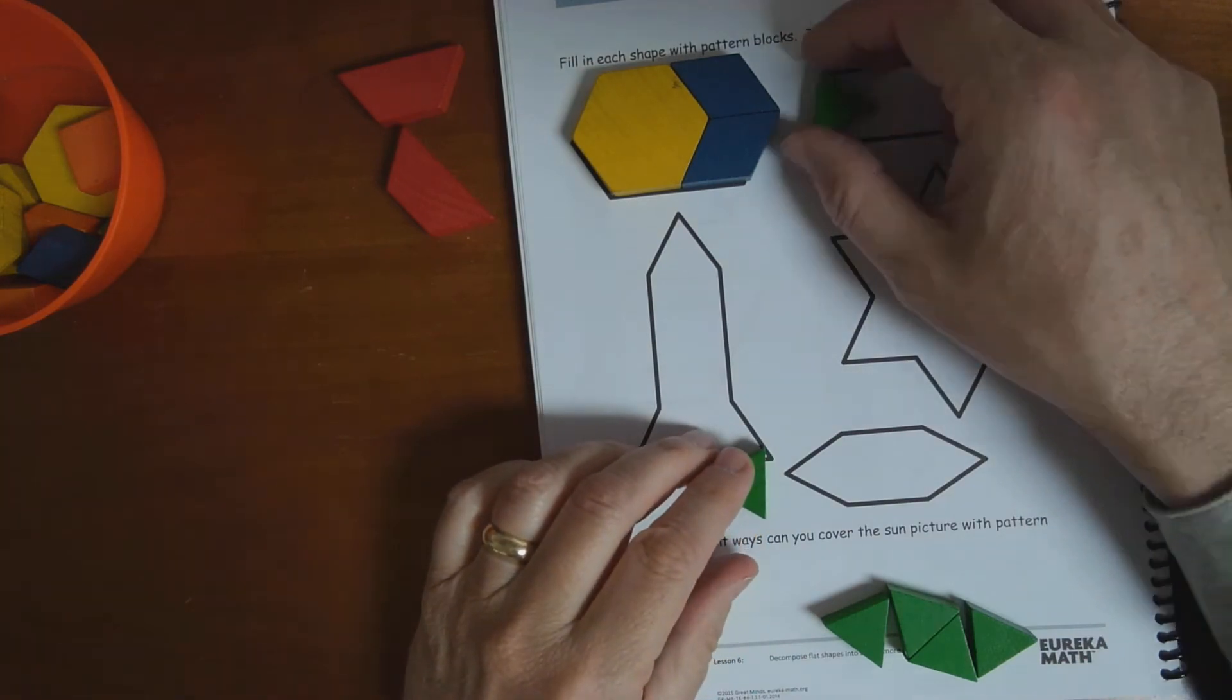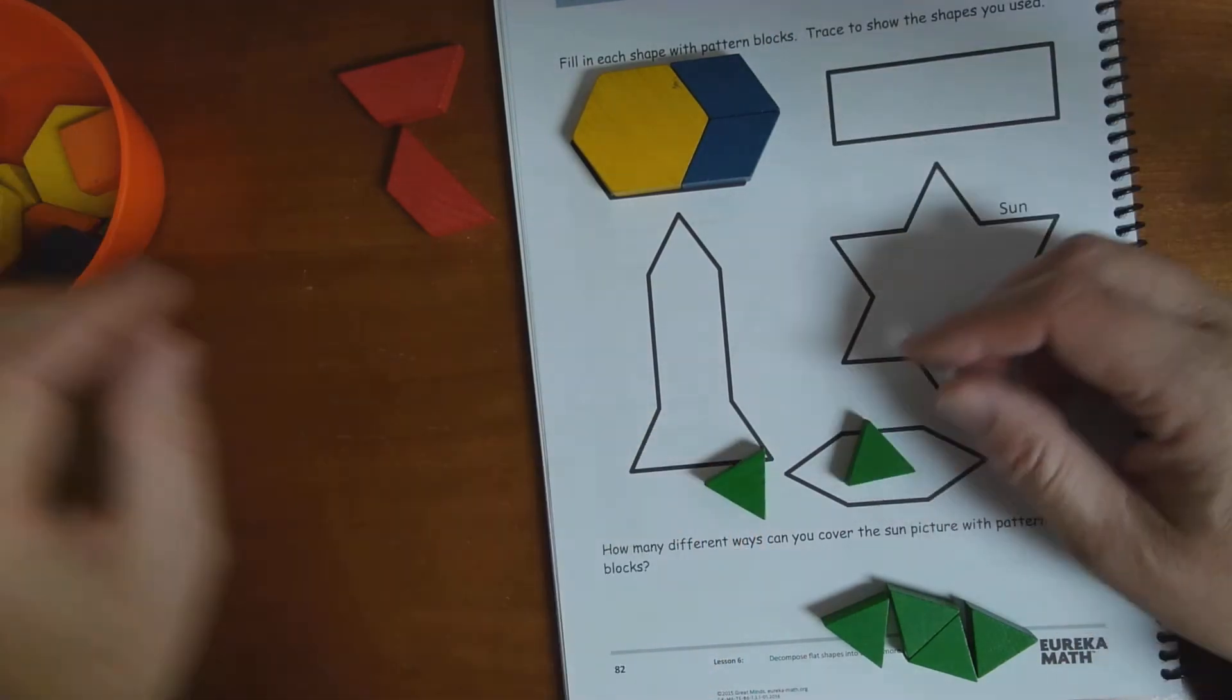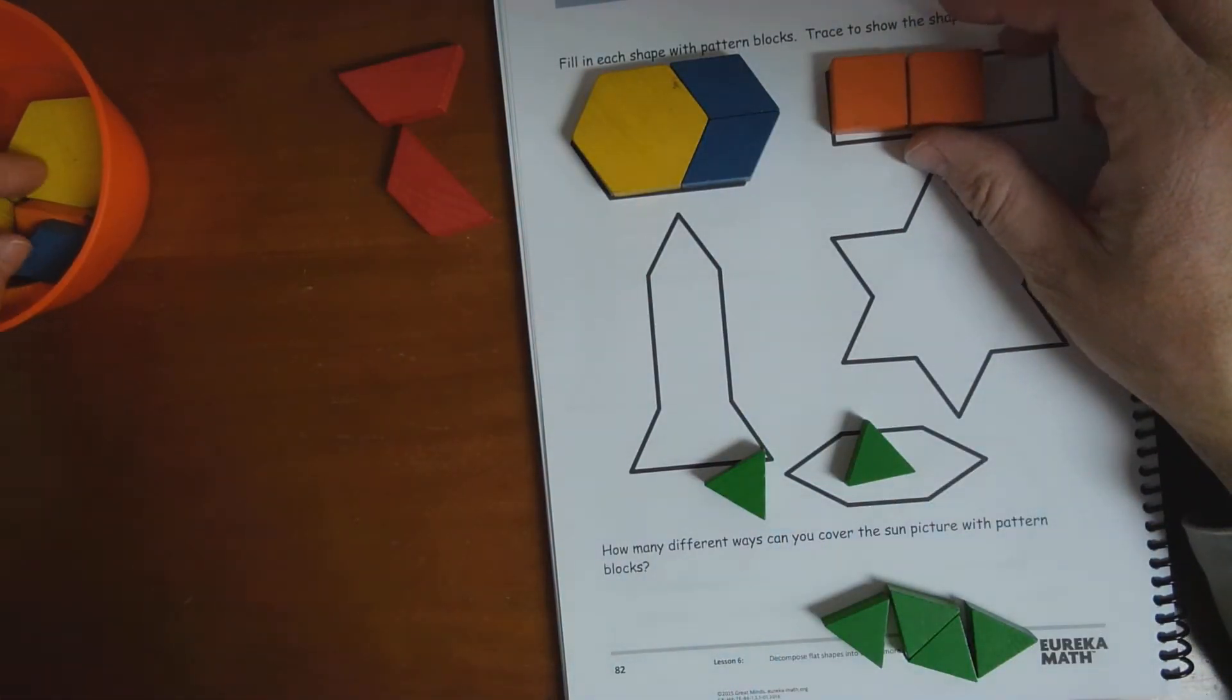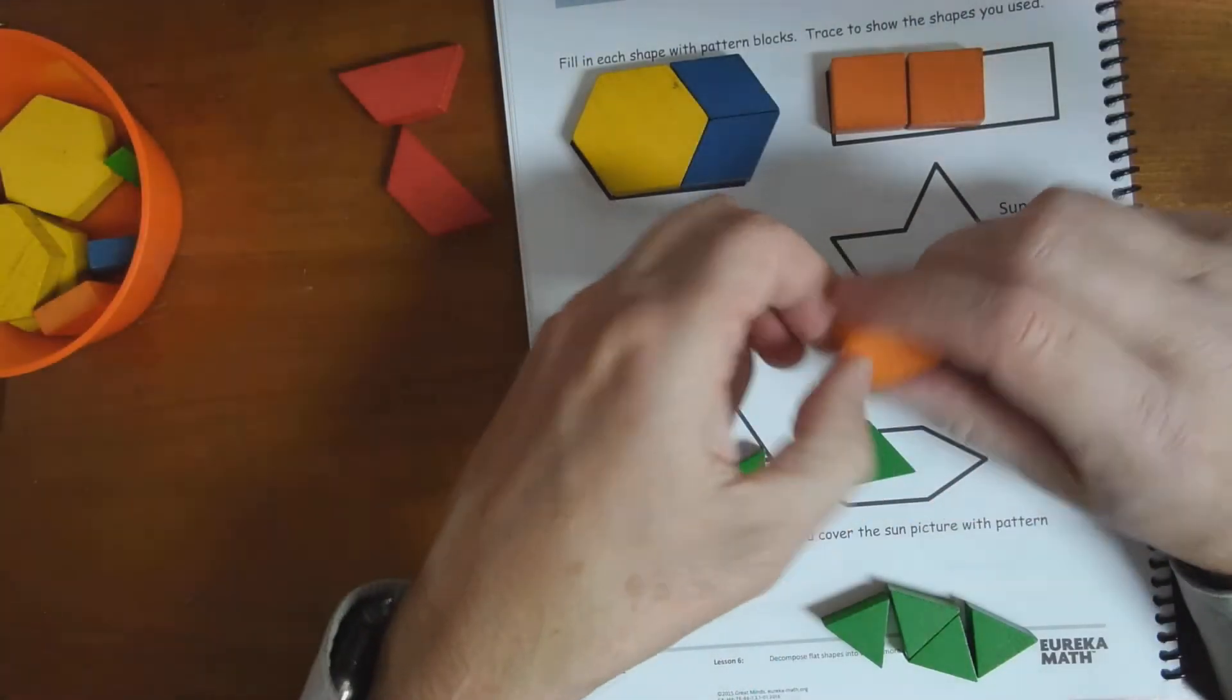You know what I want to try? I don't think I can use these. I think the only thing I can use to cover this up are these squares. How many squares? Three.